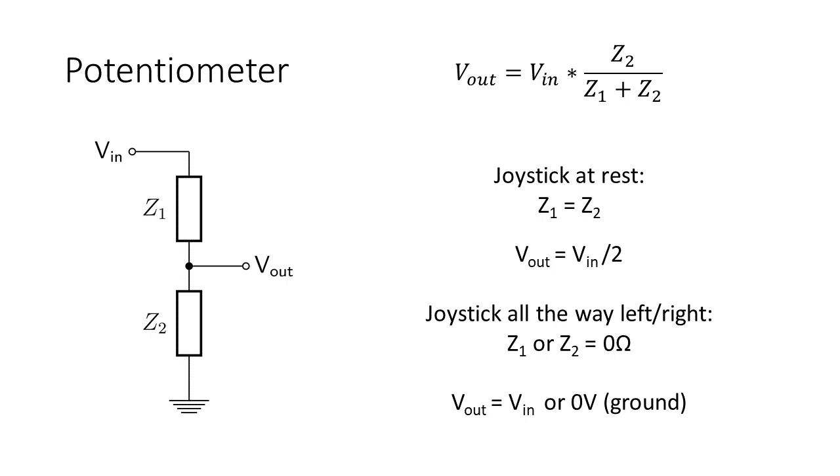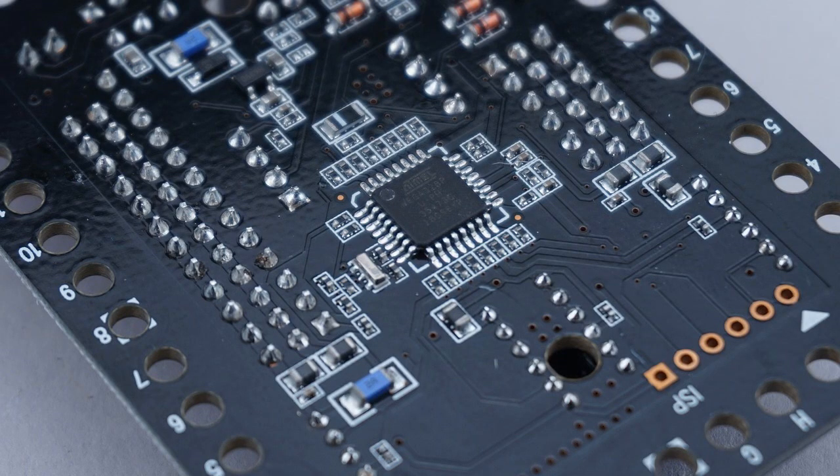If the joystick is moved in a way so the potentiometer is maxed out then Z1 is 0 ohms or Z2 is 0 ohms depending on the direction of the movement. When this occurs the output voltage is equal to the input voltage or ground. The magic happens when the value of the output voltage is sent to a microcontroller which translates that voltage to a digital signal which the console and game can decipher into movement.